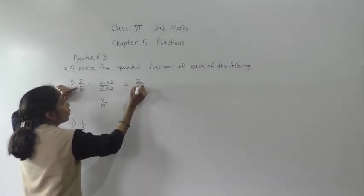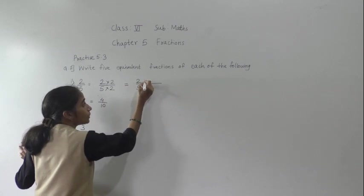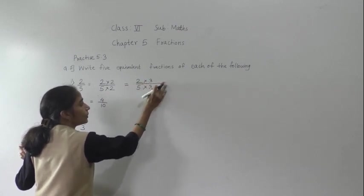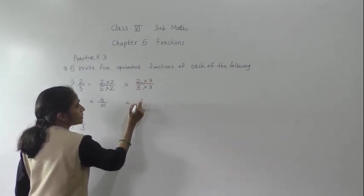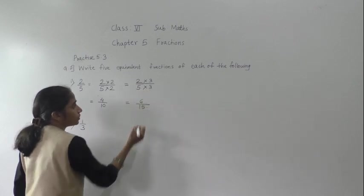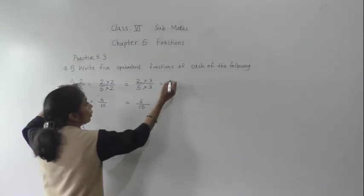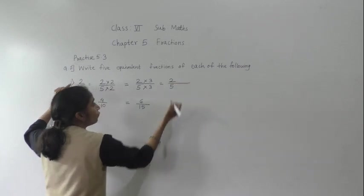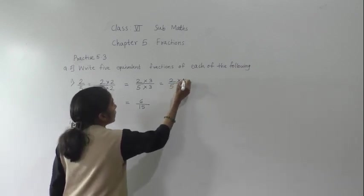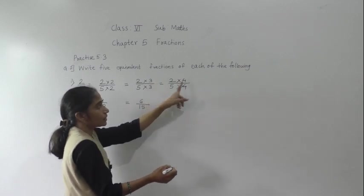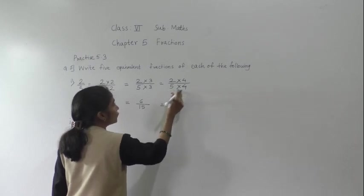Next, for 2 upon 5, multiply numerator and denominator by 3: 2 threes are 6 and 5 threes are 15, giving 6 upon 15. Then multiply by 4: 2 fours are 8 and 5 fours are 20, giving 8 upon 20.